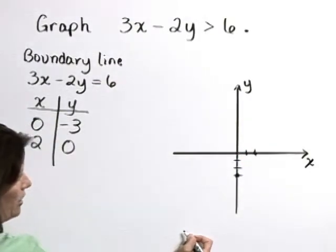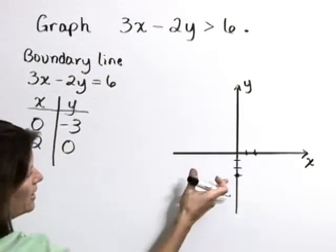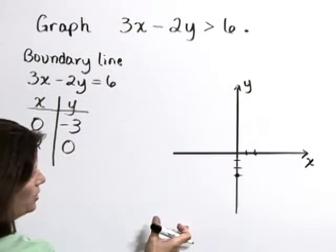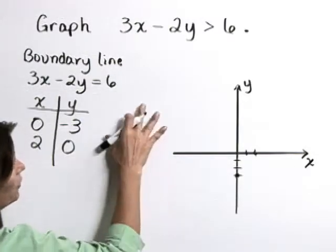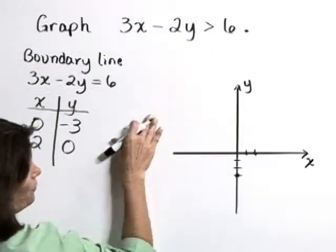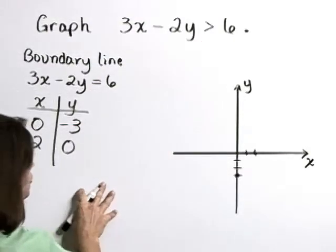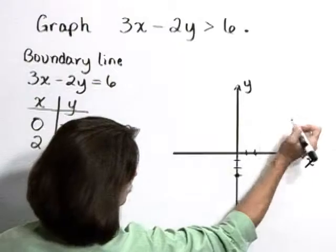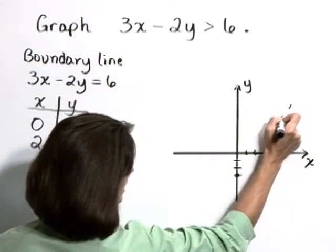Now, as we graph this boundary line, we're going to graph it as a dotted or dashed line because our inequality is a strict greater than. Points on the line do not satisfy that inequality. So make sure that you graph this as a dotted line.